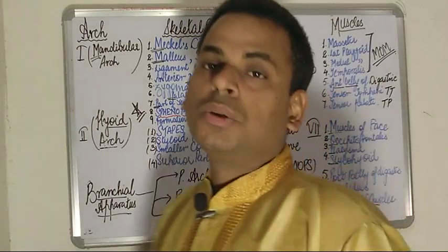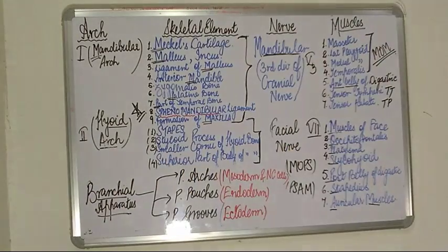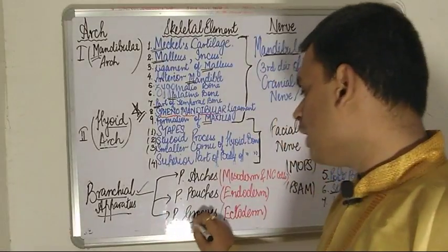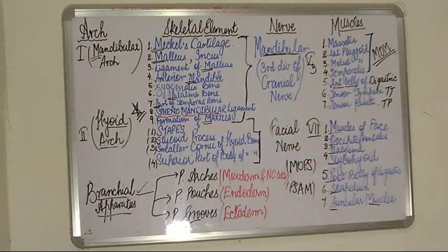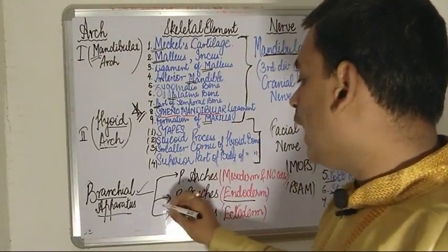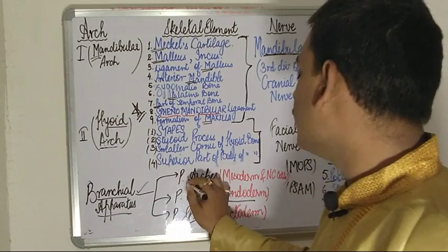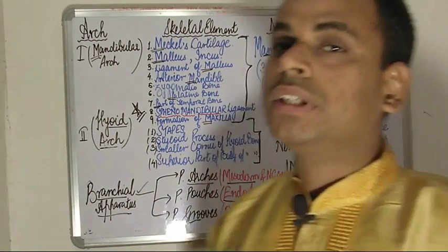Looking at the development — what they are derived from — the pharyngeal grooves of the branchial apparatus are mostly made up of ectoderm. The pouches are composed of endoderm, whereas the pharyngeal arches themselves are basically comprising of mesoderm and neural crest cells.